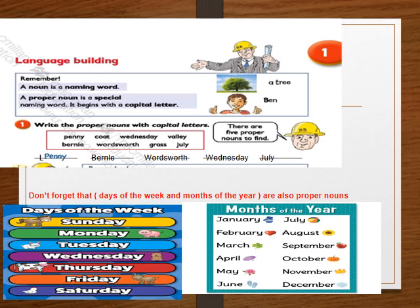Write the proper nouns with capital letters. From the list: Penny, Wednesday, Valley, Bernal, Words, Grass, July. Penny and Bernal are names of boys, so they get capitalized. Wednesday and July must also be capitalized — days of the week and months of the year are always capitalized as proper nouns. So Sunday starts with a capital S, Friday with capital F, and January with capital J, wherever they appear in a sentence.